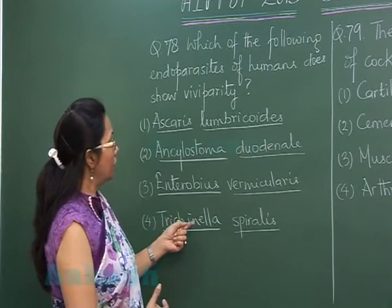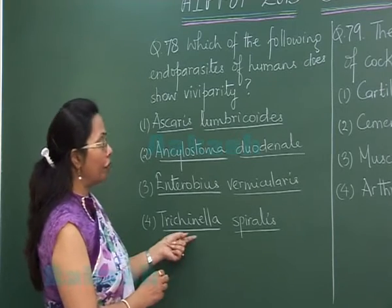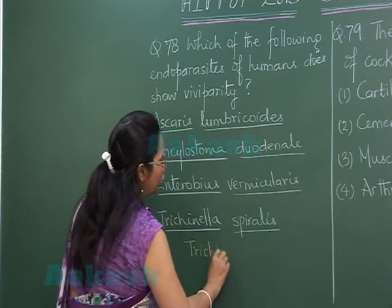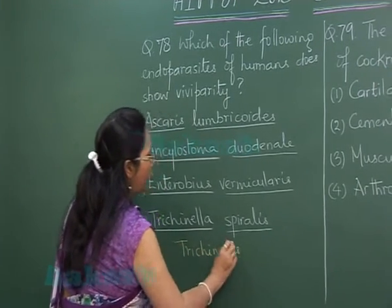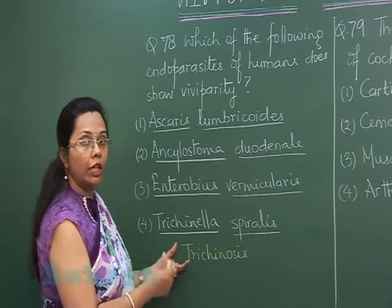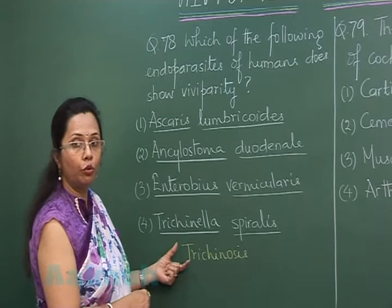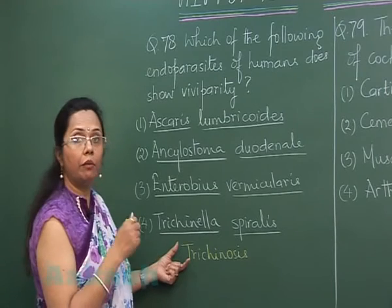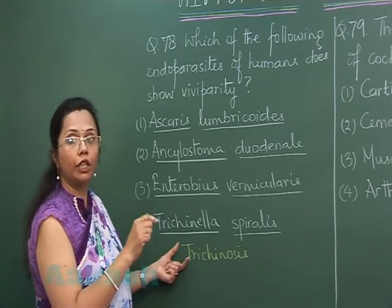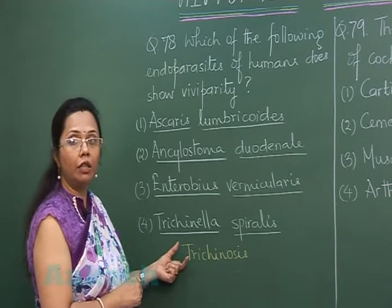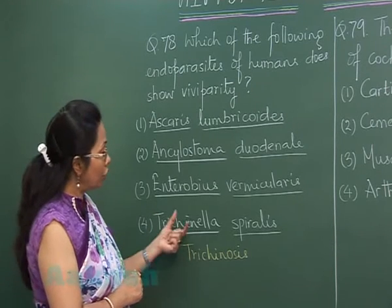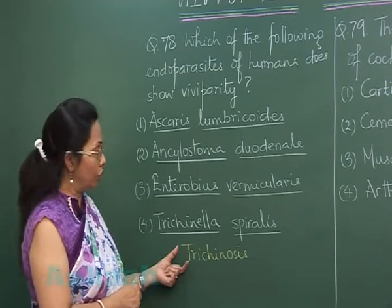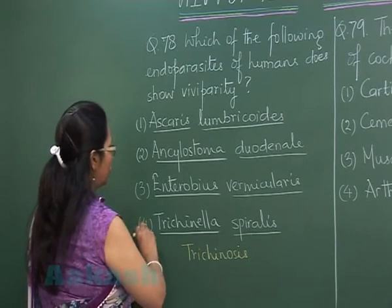Trichinella spiralis, however, is viviparous. The worms live in the small intestine and bore into the mucosa, where the female directly gives birth to juveniles. The juveniles migrate from the intestine into the bloodstream and finally reach the skeletal muscles. Such worms can reach the human body via consuming pig's muscles. So the answer is option 4 — Trichinella.